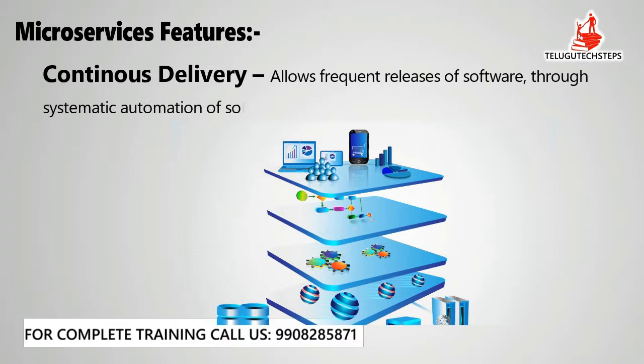You can deliver the application to the client every frequent time period. For example, in six months you can deliver six times. After the first month of development, you show it to the client — if they're satisfied, development continues. Continuous delivery involves systematic automation of software creation: developing the application, testing it, then delivering it to the client. This is what microservices architecture enables.